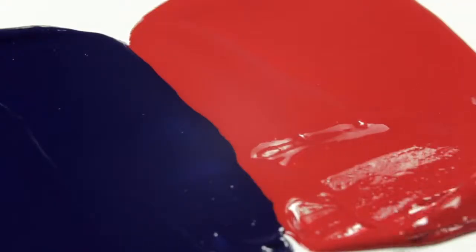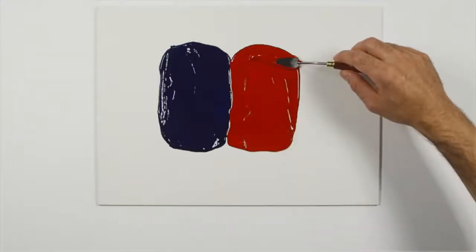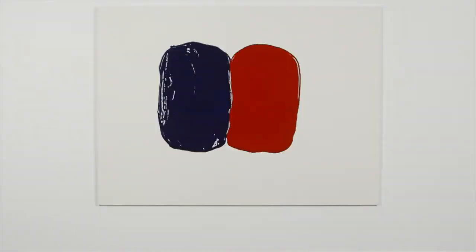Here I've mixed two colours with slow drying medium next to each other on a canvas board. Now, by using a palette knife, I can blend the two colours together.